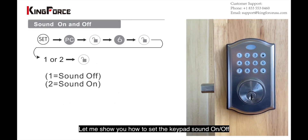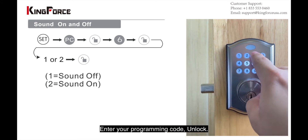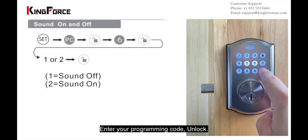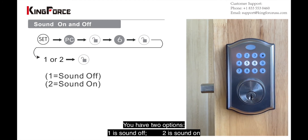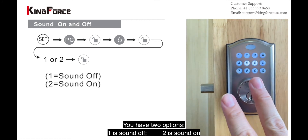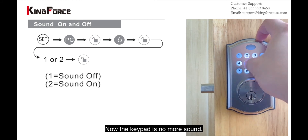Let me demonstrate how to set your keypad sound. Press the setting button, then enter your programming code and unlock. Push number six and unlock. You have two options: number one to set the sound off, number two to set the sound on. I'll push one and unlock — now the keypad is on normal sound.